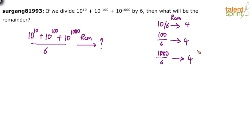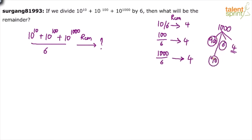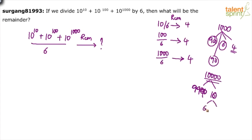When you look at 100, we break it as 90 + 6 + 4. 90 is divisible by 6, 6 is divisible by 6, so 4 is the remainder. For 1000: we get 900 + 90 + 6 + 4. Since 900, 90, and 6 are all divisible by 6, the remainder is 4. For 10,000: 9990 is divisible by 6, leaving 10, and from that 10 we get remainder 4.